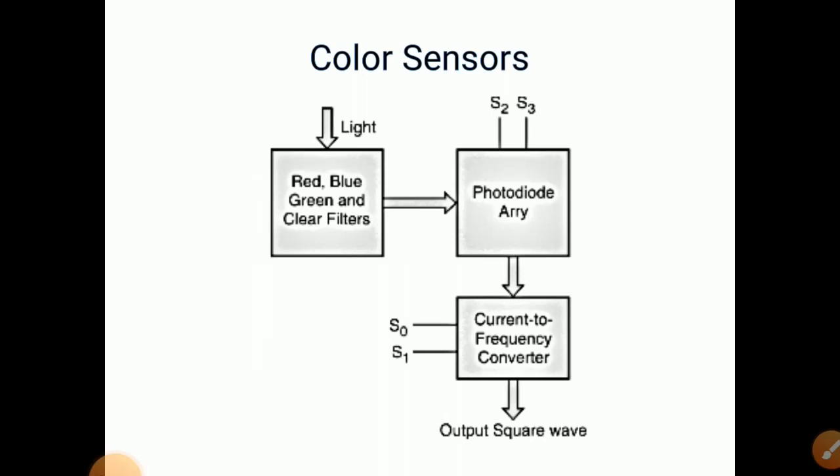Here the diagram is shown. Light falls on red, blue, green and clear filters, then it is given to photodiode array. This photodiode array gives output to current to frequency converter, and then we get output square waveform. This is the working of color sensor.